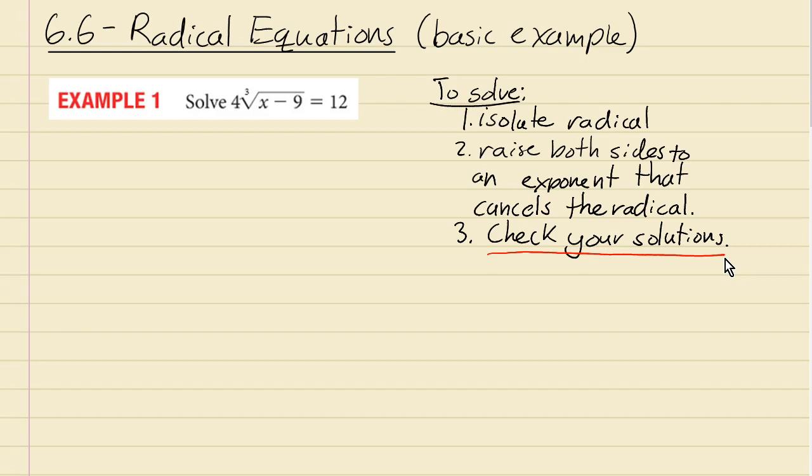But in this section, it's extra extra important and we'll see in the next video why it's so important. So first, let's isolate the radical. We're gonna divide both sides by 4 to cancel out with this multiplication by 4. That should give us just the cube root by itself of x minus 9, and 12 over 4 is 3.